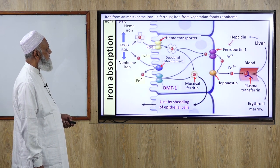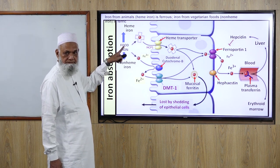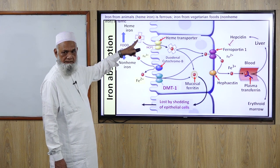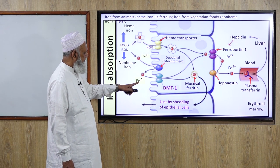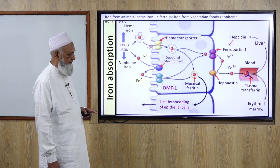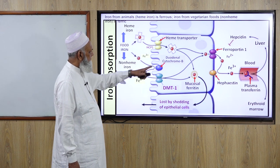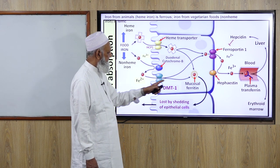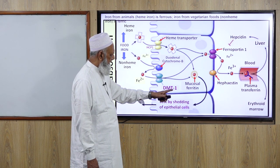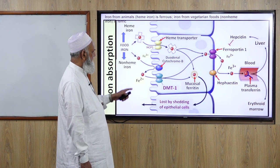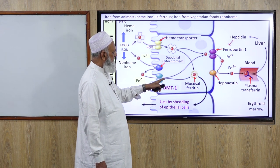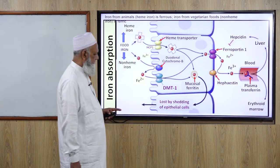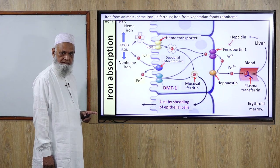This is a picture illustrating iron absorption from food. Heme iron is in ferrous form; non-heme iron is in ferric form. Ferric form must be converted to ferrous for absorption. This conversion is done by duodenal cytochrome B, which reduces ferric iron to ferrous form. Ferrous iron is then absorbed through divalent metal transporter 1 (DMT1) into enterocytes, moves to the basolateral surface, with the remaining portion forming ferritin, which is lost by shedding of duodenal epithelium.